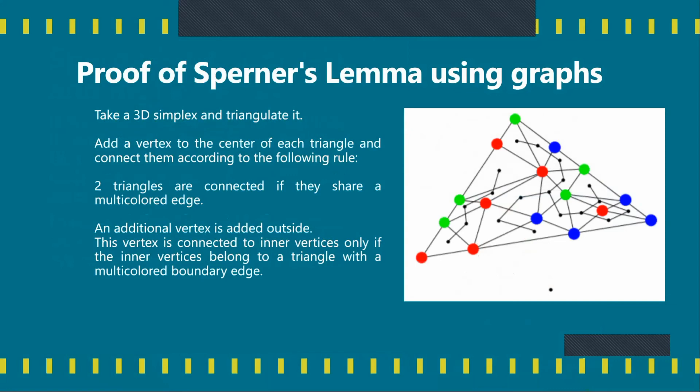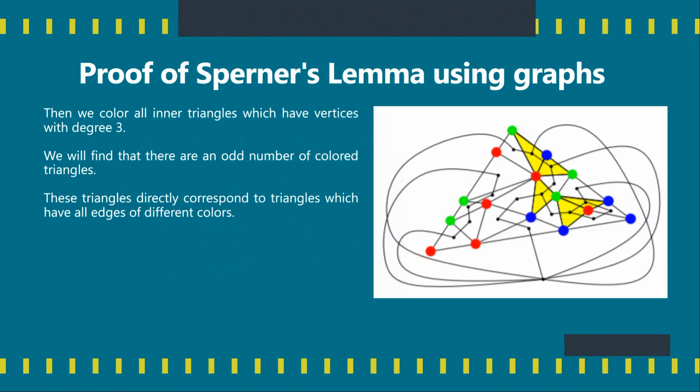Now briefly we look at proof of Sperner's Lemma using graphs. On the right we have an example of a 2D simplex which has already been triangulated and basically what's been done is that every single triangle has been given an edge and these edges have been connected based on whether the two triangles, adjacent triangles, share a multi-colored edge. For example, the top two triangles we see, they share a multi-colored edge of green and red, so they are given an edge between their two respective vertices. The topmost triangle and the one to the immediate left of it, they do not share an edge between their vertices as they're both red.